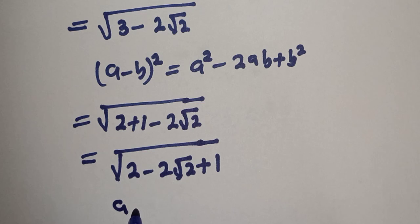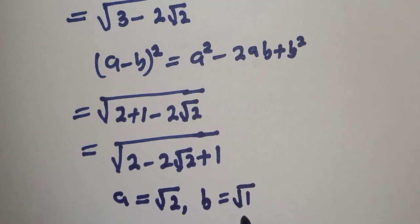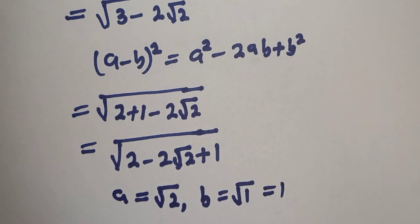From here, a is equal to root 2, then b is equal to square root of 1, which is also equal to 1.